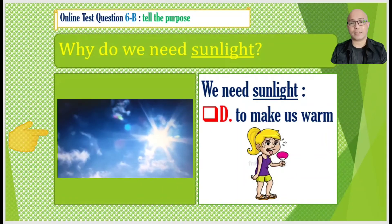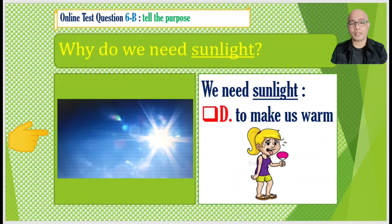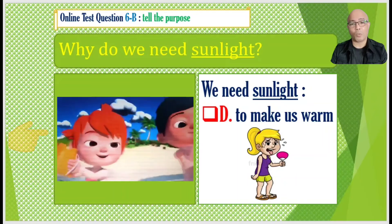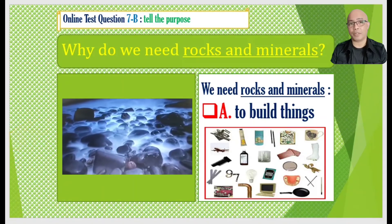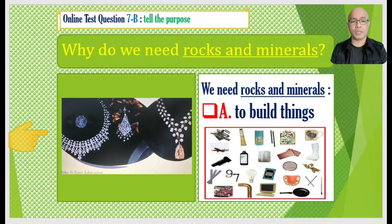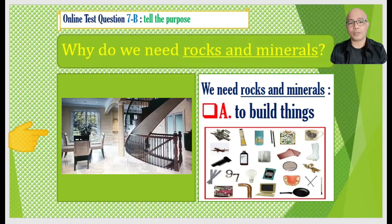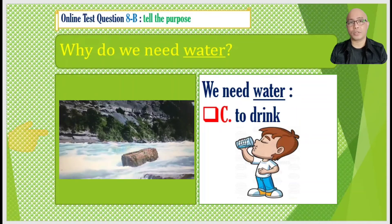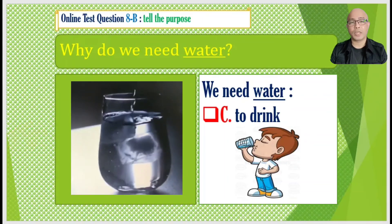Answer number six: Why do we need sunlight? We need sunlight — D to make us warm. Answer number seven: Why do we need rocks and minerals? We need rocks and minerals — A to build things. Answer number eight: Why do we need water? We need water — C to drink.